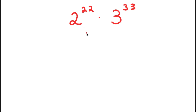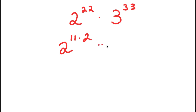To solve this, what I'm going to do is first write 2 to the power of 22 as 2 to the power of 11 times 2. And now I have this times 3 to the power of 33. Well, 33 is a multiple of 11 — that's the same thing as 11 times 3.